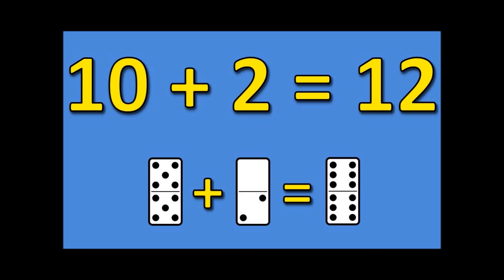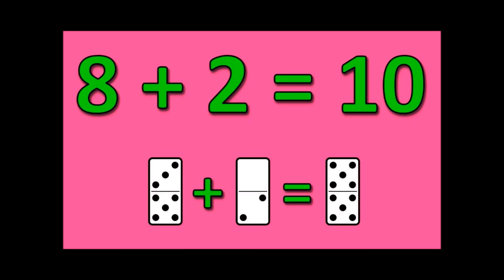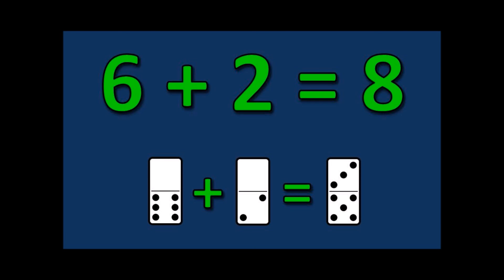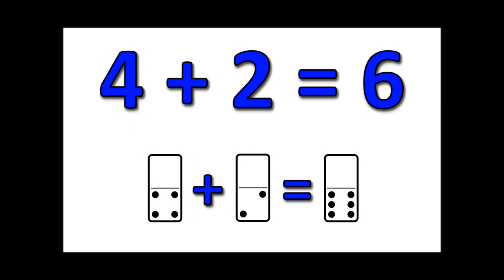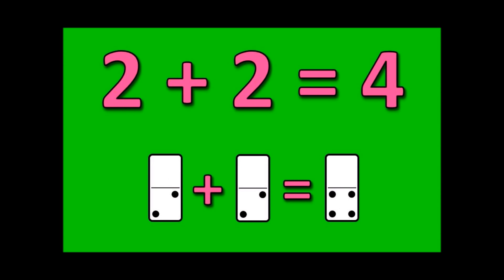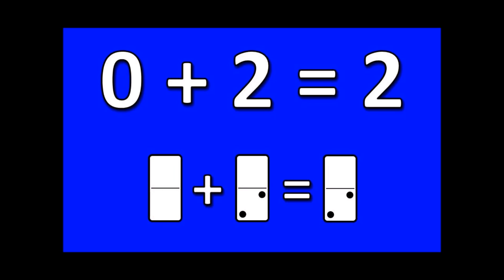Now down. Ten plus two is twelve. Nine plus two is eleven. Eight plus two is ten. Seven plus two is nine. Six plus two is eight. Five plus two is seven. Four plus two is six. Three plus two is five. Two plus two is four. One plus two is three. Zero plus two is two. That's it, and now we're through.